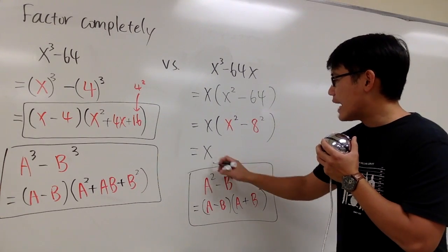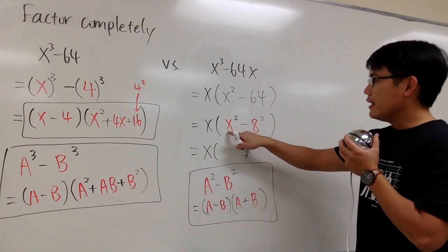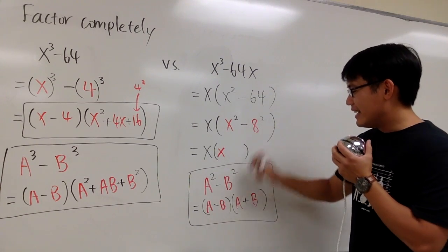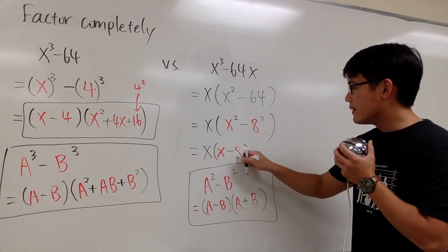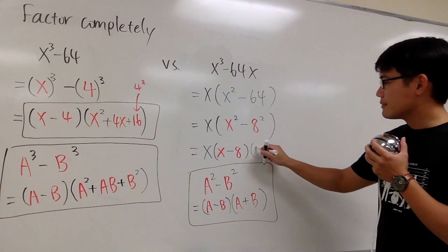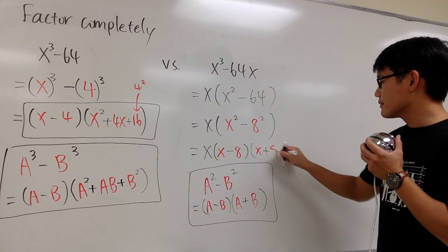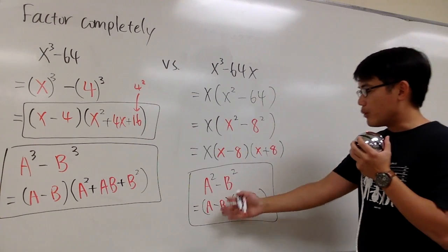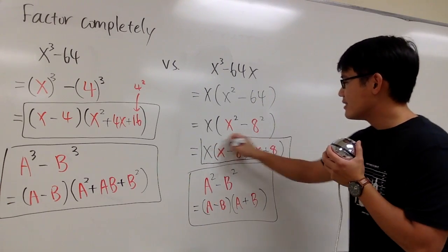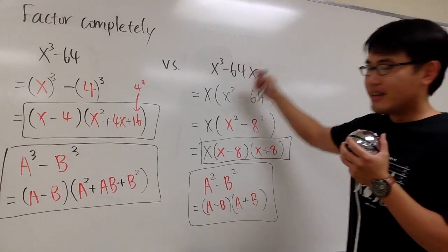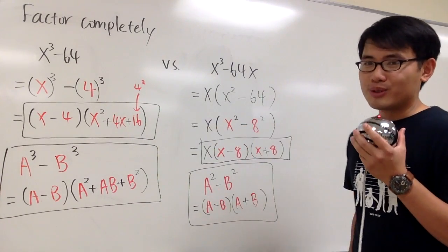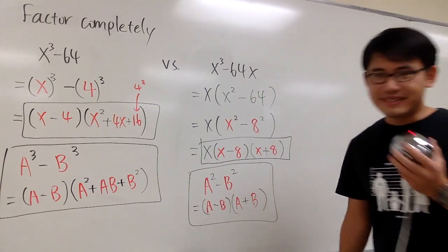So we have x on the outside, and then for the difference of two squares part, x is the a and 8 is the b, giving us (x - 8)(x + 8). The final answer is x(x - 8)(x + 8). Look at the two answers — they are totally different. They required different approaches to factor. That's it.